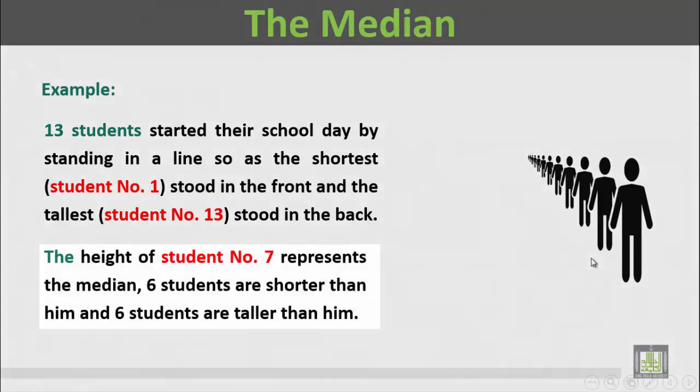The height of student number 7 represents the median, where 6 students are shorter than him and 6 students are taller than him.